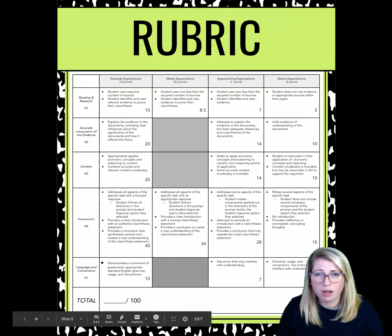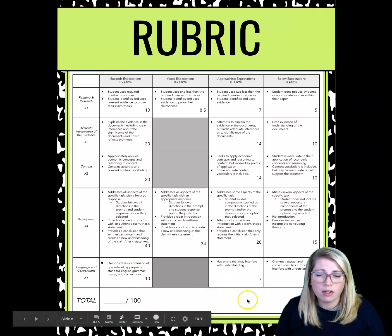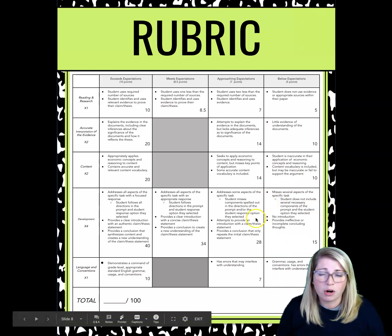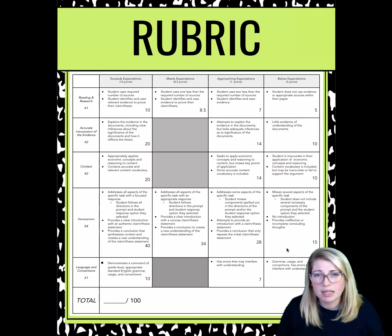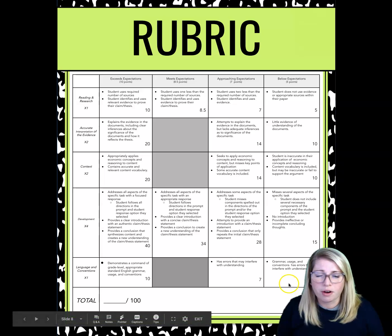Here's the rubric you'll be held accountable to — notice it's worth 100 points. If you choose option two or three and only do the slideshow but not the screencast, you're going to get knocked in the development part and won't get full points for only doing half the project. If you're doing options two or three, you need two different things: a screencast and the slides, or a recorded speech and the outline, to get full credit.